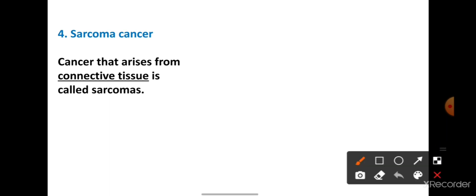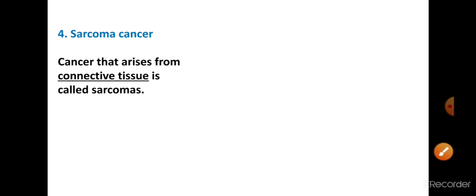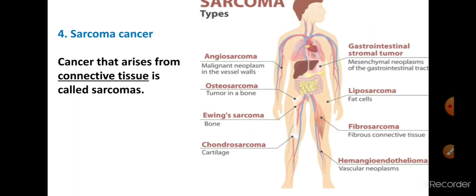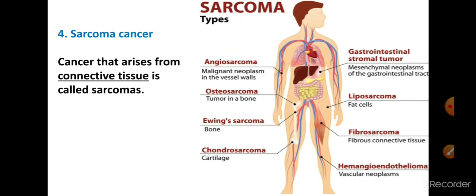Next है sarcoma cancer। Cancer that arises from connective tissue is called sarcoma। अगर connective tissue में cell का mutation और division होता है तो उस type के cancer को sarcoma cancer कहा जाता है। Sarcoma cancer के भी बहुत से types हैं जो यहाँ दिखाई दे रहे हैं — इन्हें हम one by one आने वाले videos में discuss करेंगे।